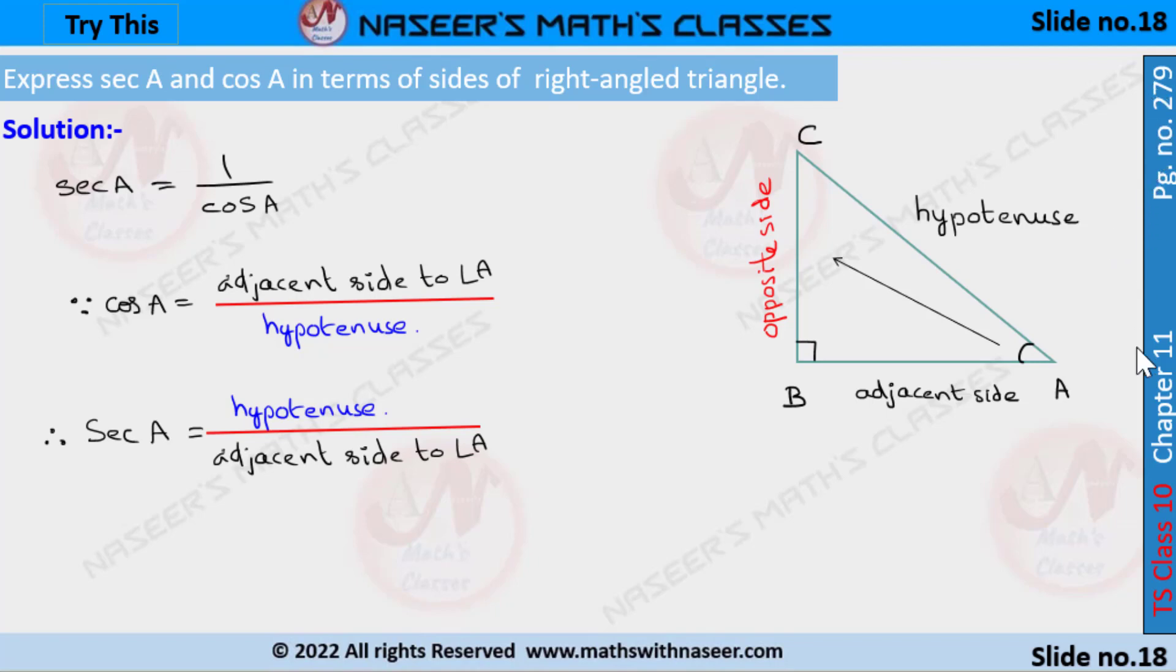Page number 279, chapter 11, trigonometry. Express sec A and cos A in terms of sides of a right-angled triangle. Let ABC be a right-angled triangle.